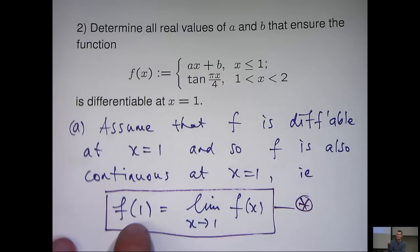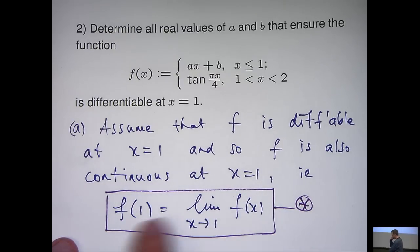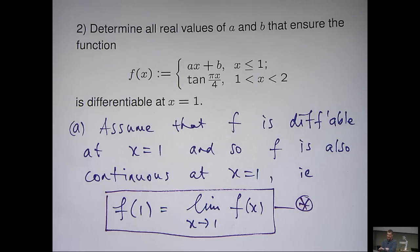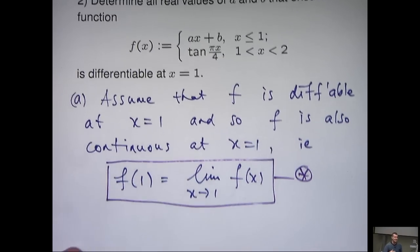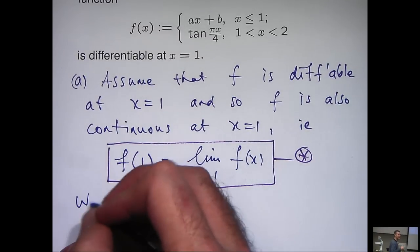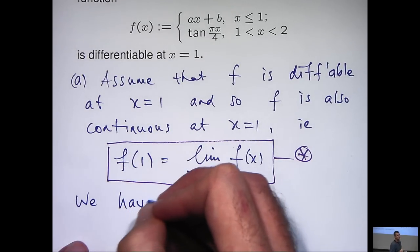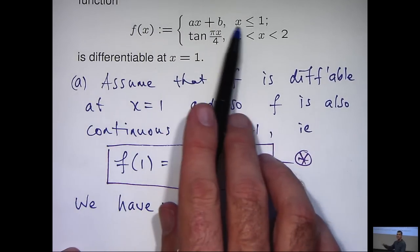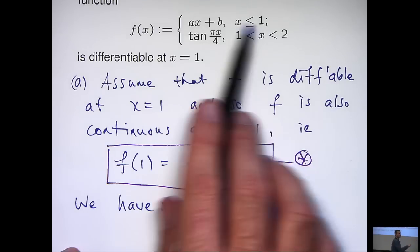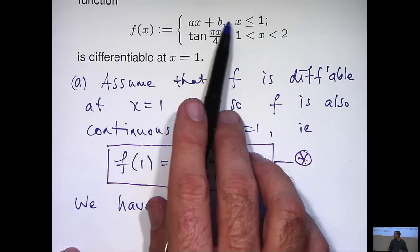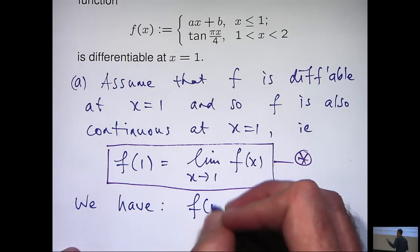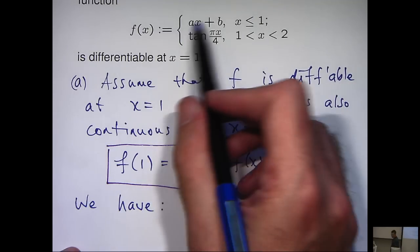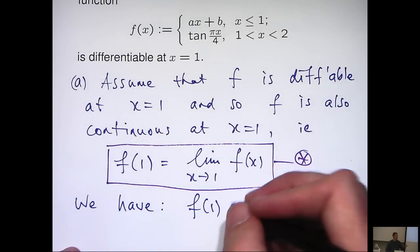So what we're going to do is work out the left hand side and the right hand side, make them equal and then hopefully that will give us some insight into the values of a and b that we need. So let's consider f of 1. If we go up to our definition we see that for x less than or equal to 1, f of x is ax plus b, so for x equals 1 we'll just have a plus b.